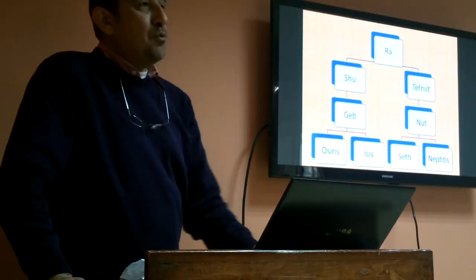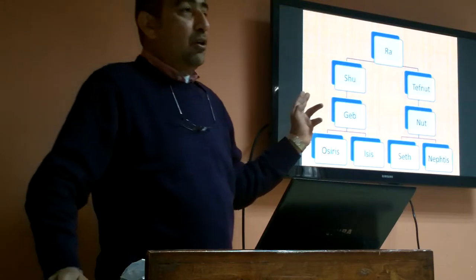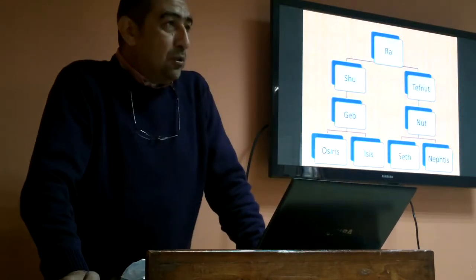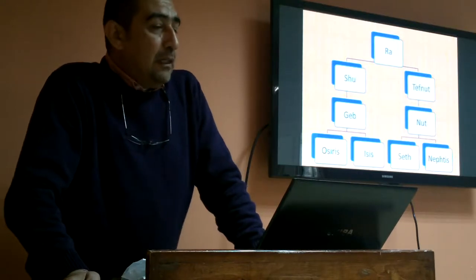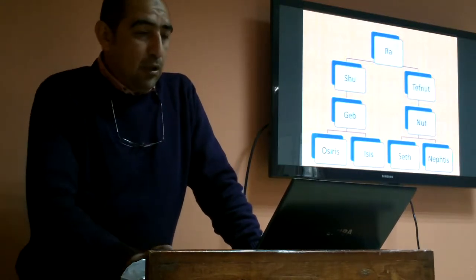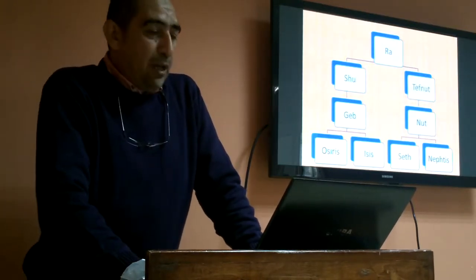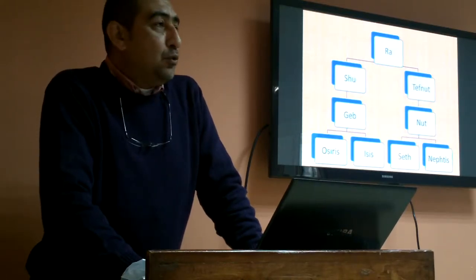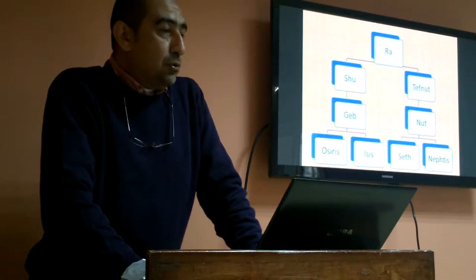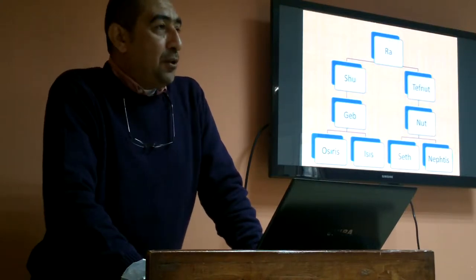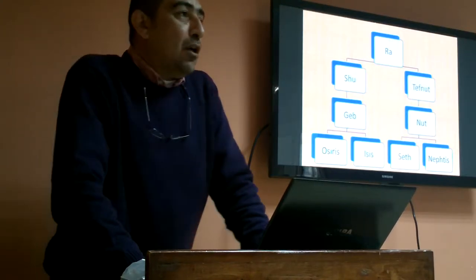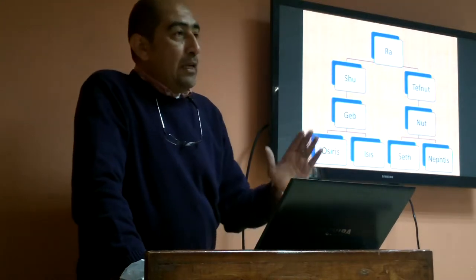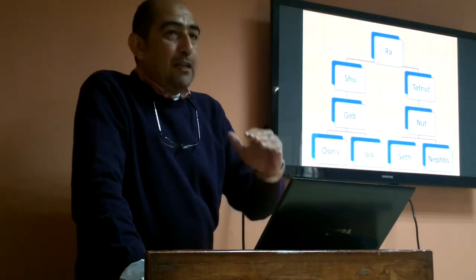One of the gods was Shu and the other was goddess Tefnut. Shu was the god of air and Tefnut was his wife. When they got married, they had two children: Geb and Nut. Geb was the god of earth and Nut was the goddess of sky. When Geb and Nut were married, they had four children — two boys and two girls.